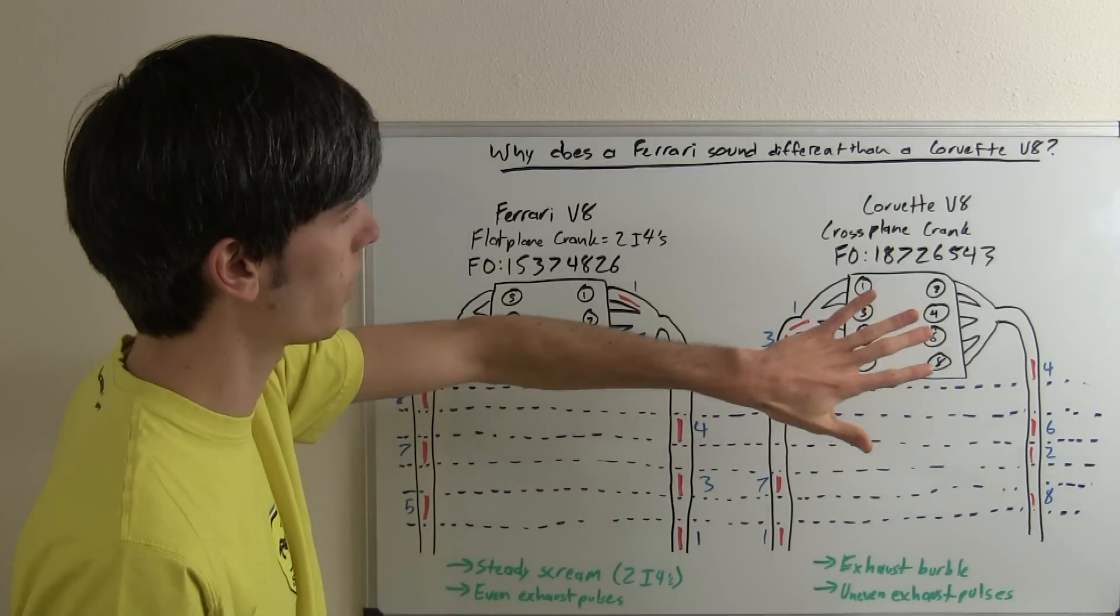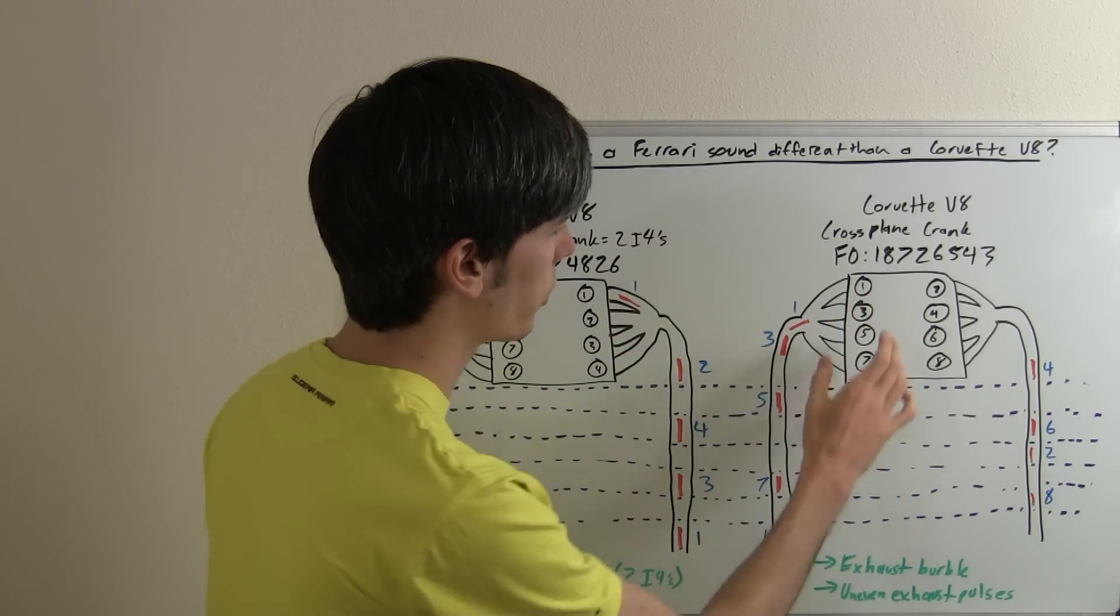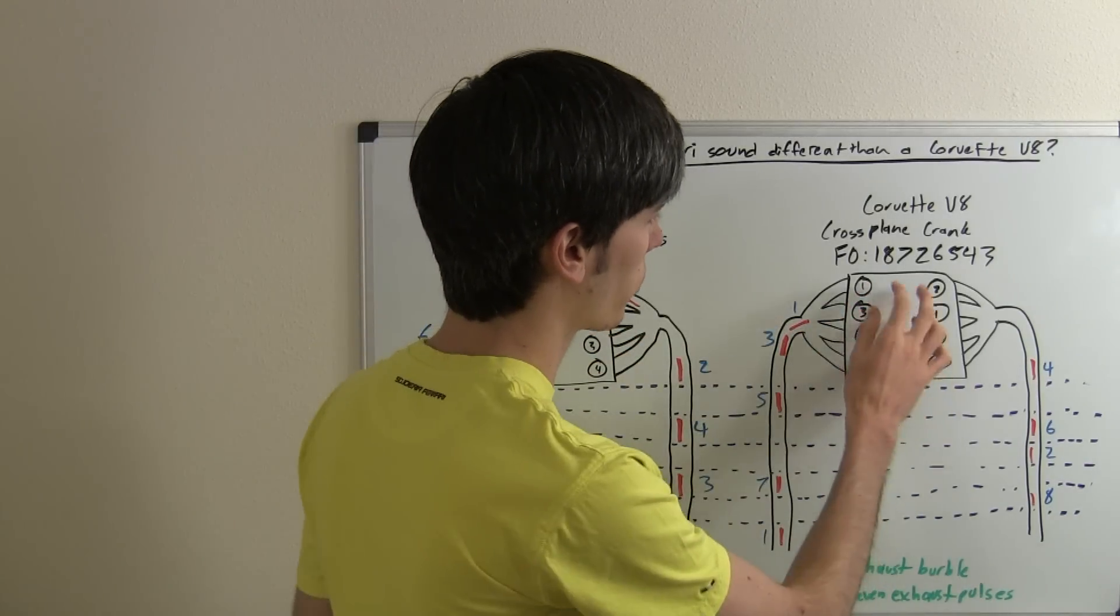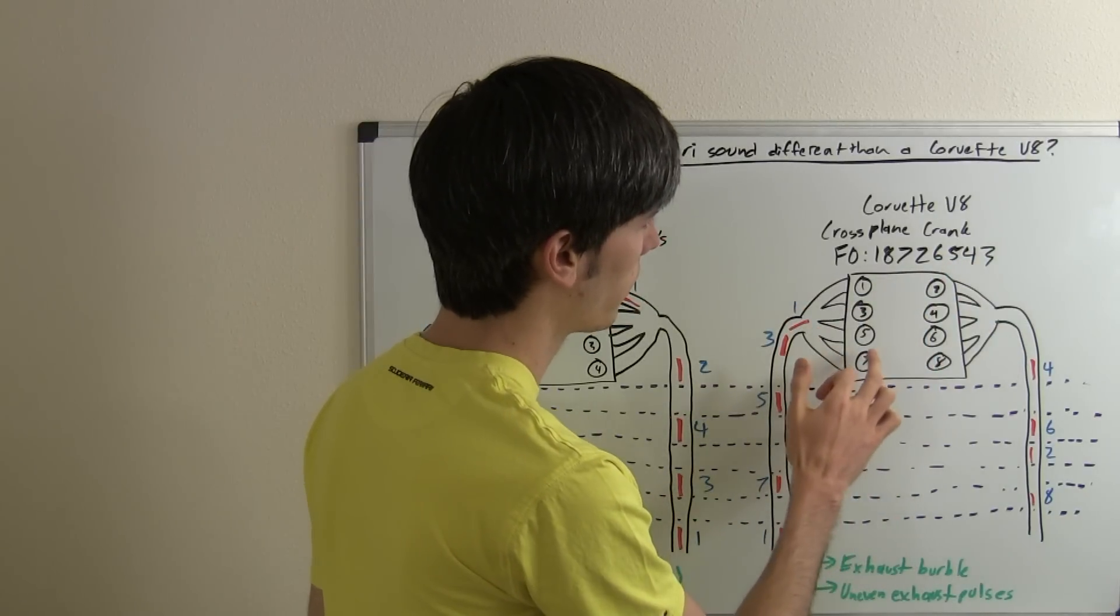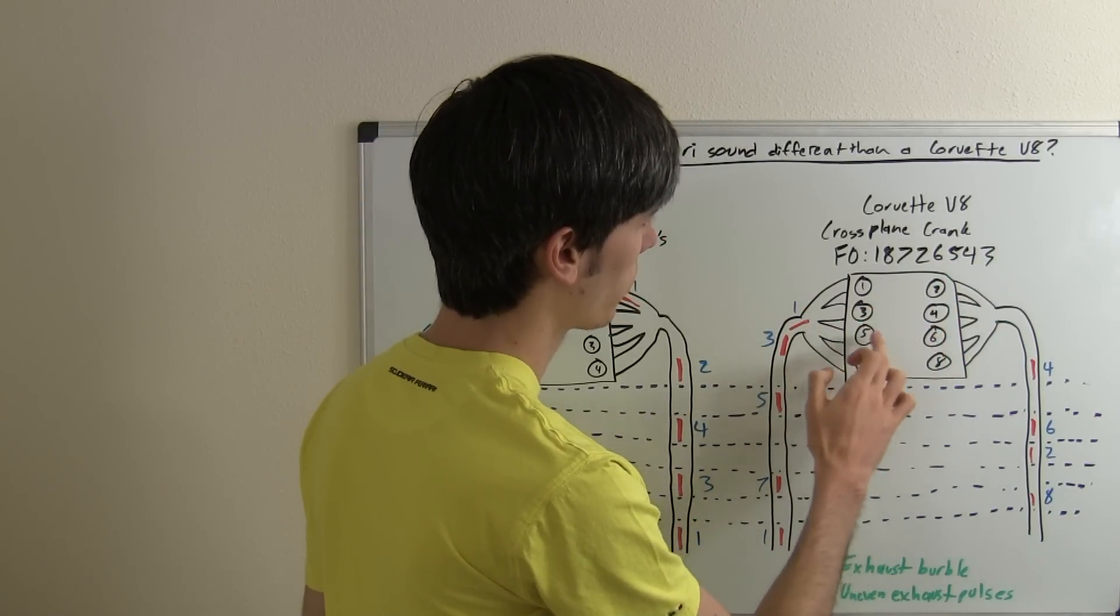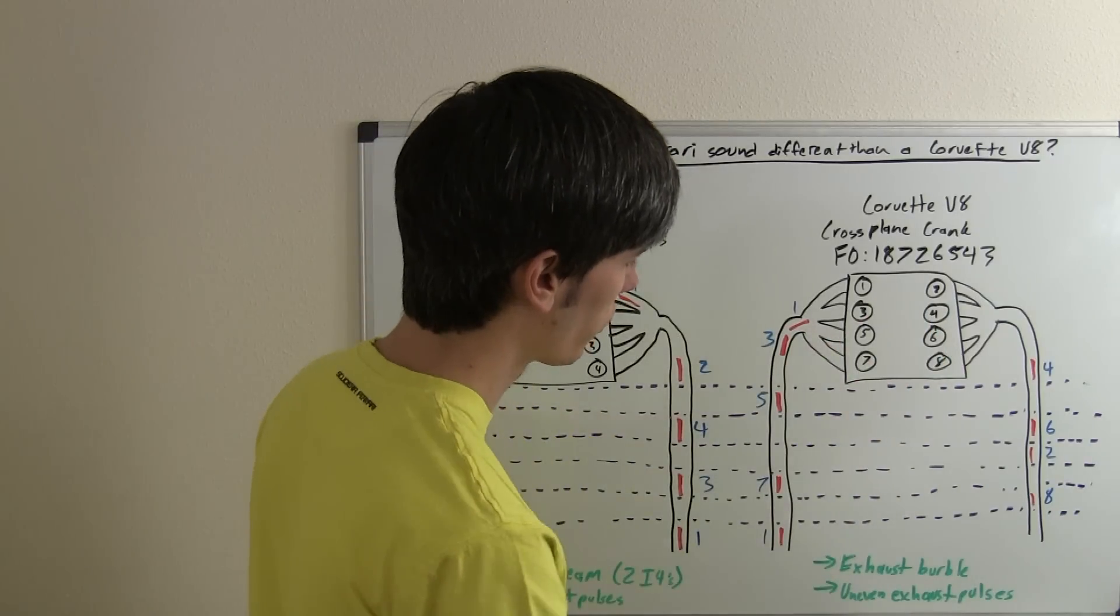And so what we've got here on the Corvette, this is why it's going to sound different, because look at what happens with its firing order. So we've got 1, 8, 7, 2, 6, 5, 4, 3. 1, 8, 7, 2, 6, 5, 4, 3.